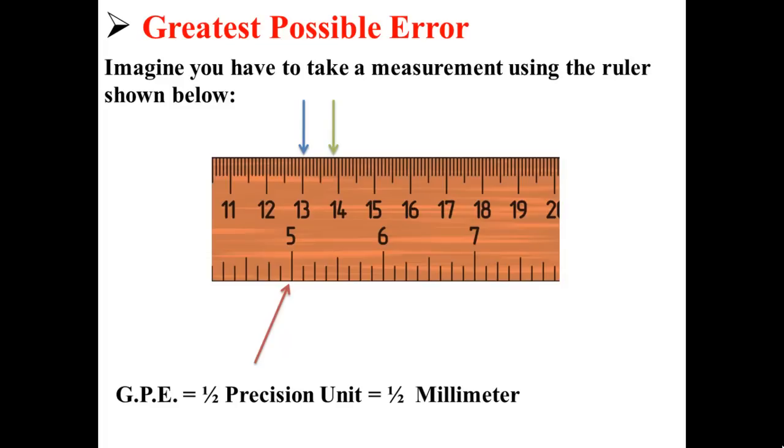Our greatest possible error is equal to half of a precision unit. So our greatest possible error is equal to half a millimeter. Half a millimeter is the greatest possible error we can make when the instrument is being used correctly.